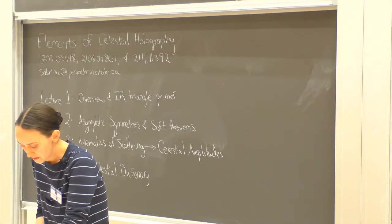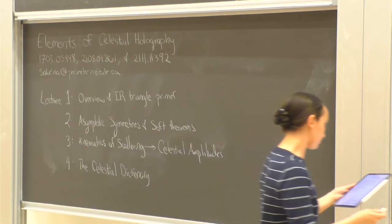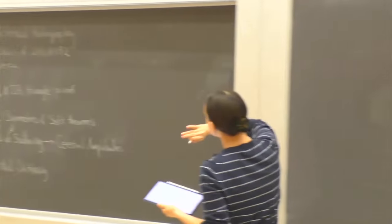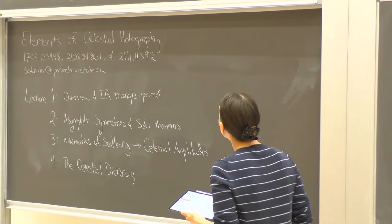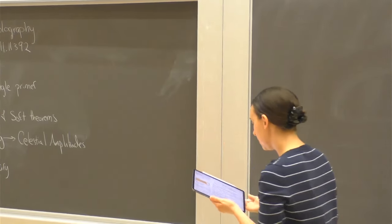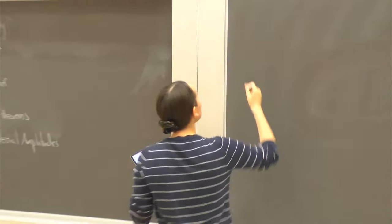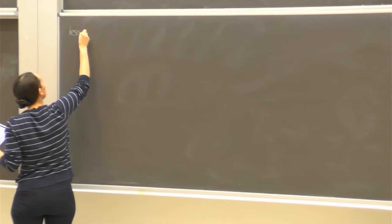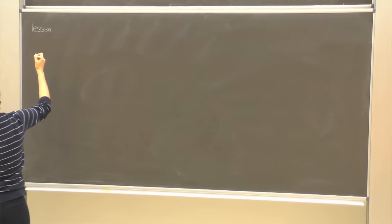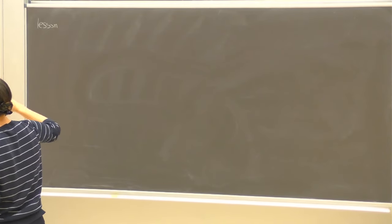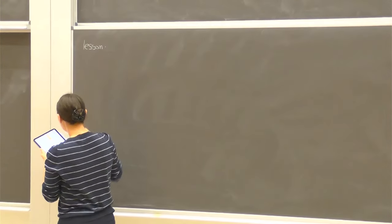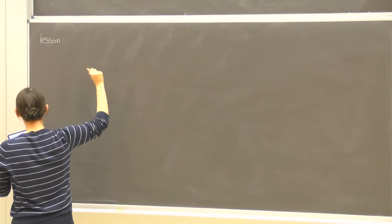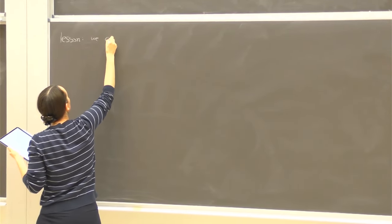One upshot of celestial holography, especially from the Strominger group focusing on the IR triangle, is that we can make headway at understanding flat holography starting from the bottom up. The lesson — from Strominger, or from people doing AdS/CFT from a more geometrical point of view like Brown-York stress tensors — is that we can make headway by ignoring what's happening at the UV for now and start with a bottom-up approach.